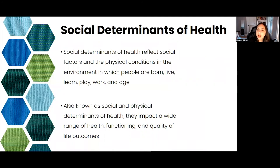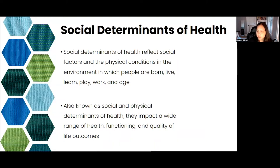Social determinants of health reflect social factors and the physical conditions in the environment in which we live. These factors are known as social and physical determinants of health, and they really impact a wide range of health functioning and quality of life outcomes. There has been a lot of research demonstrating the link between these structural factors and health.